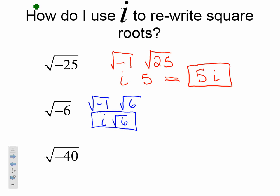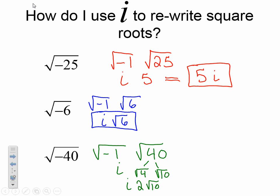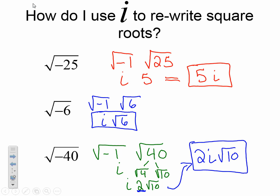Last but not least, we're going to work on square root of negative 40. First, break it down: square root of negative 1 times square root of 40. We know square root of negative 1 is i. Square root of 40 is not a perfect square, but the square root of 4 goes into 40, giving us 4 times 10. We break this down and get i times square root of 4 times square root of 10, which is 2i√10. Writing our number first, this is written as 2i square root of 10.